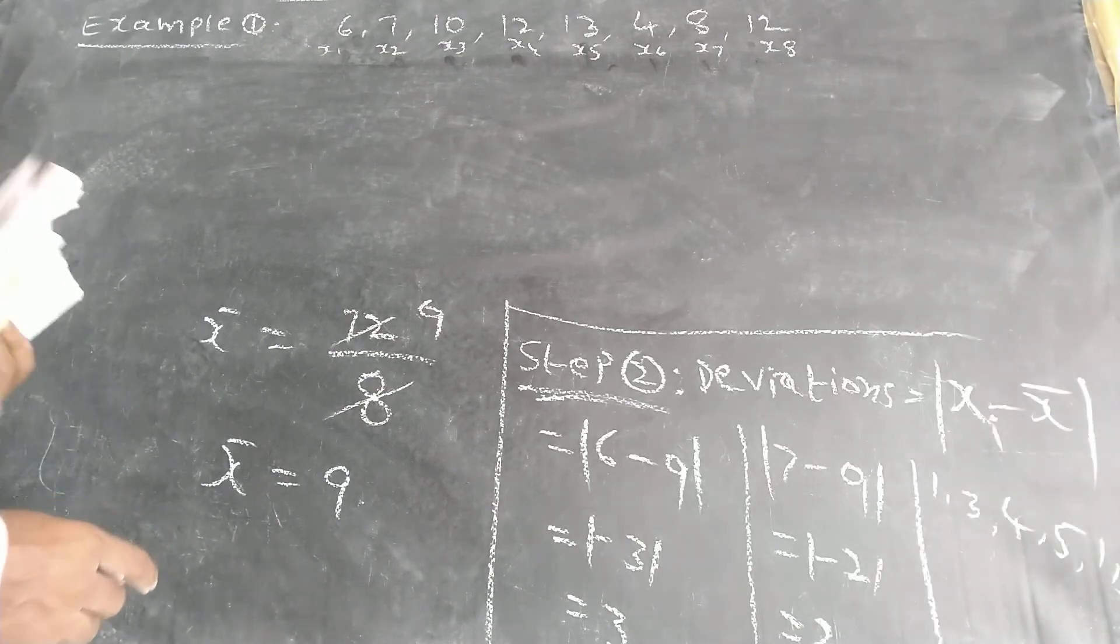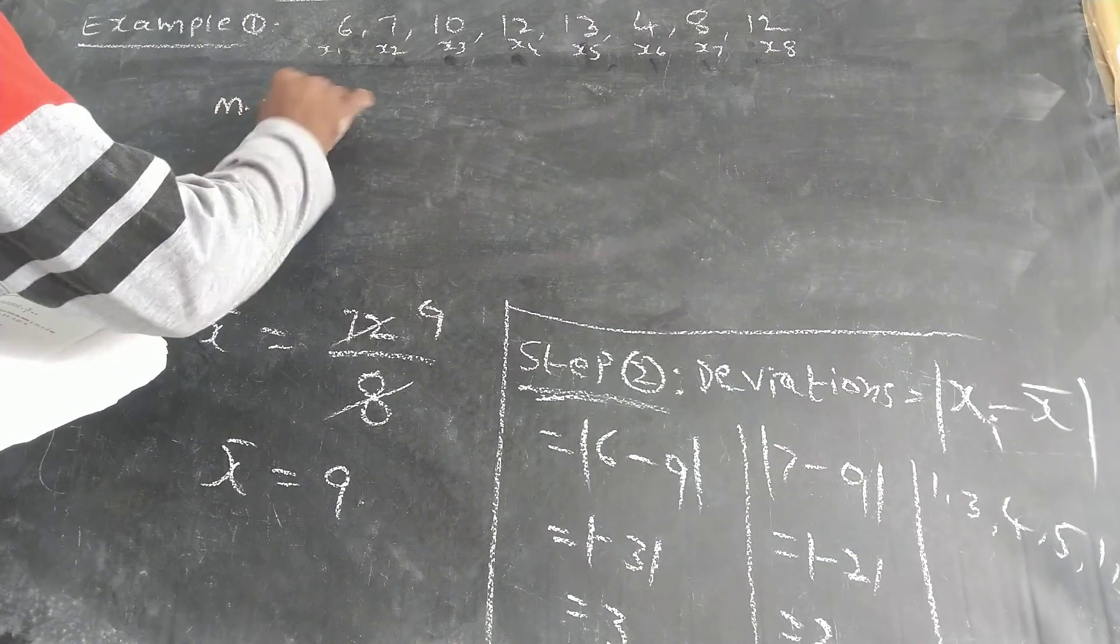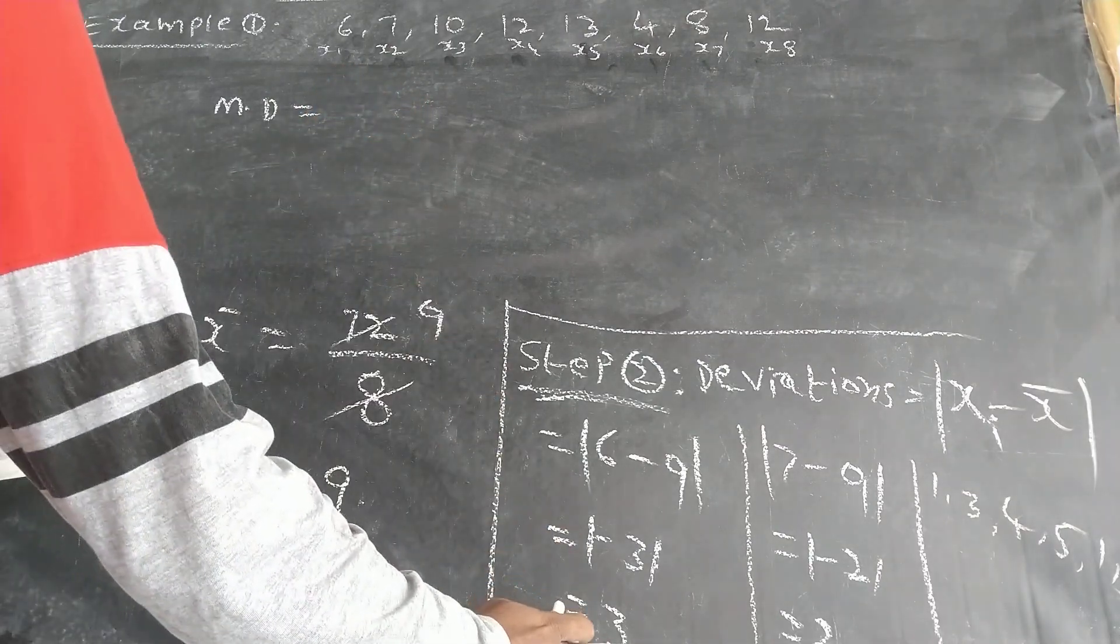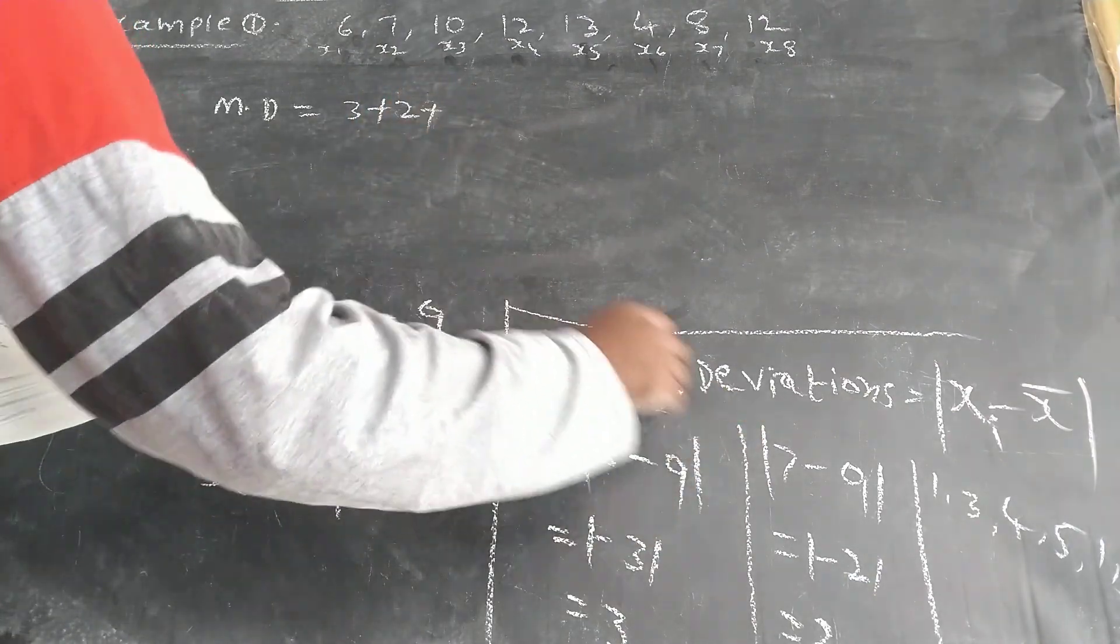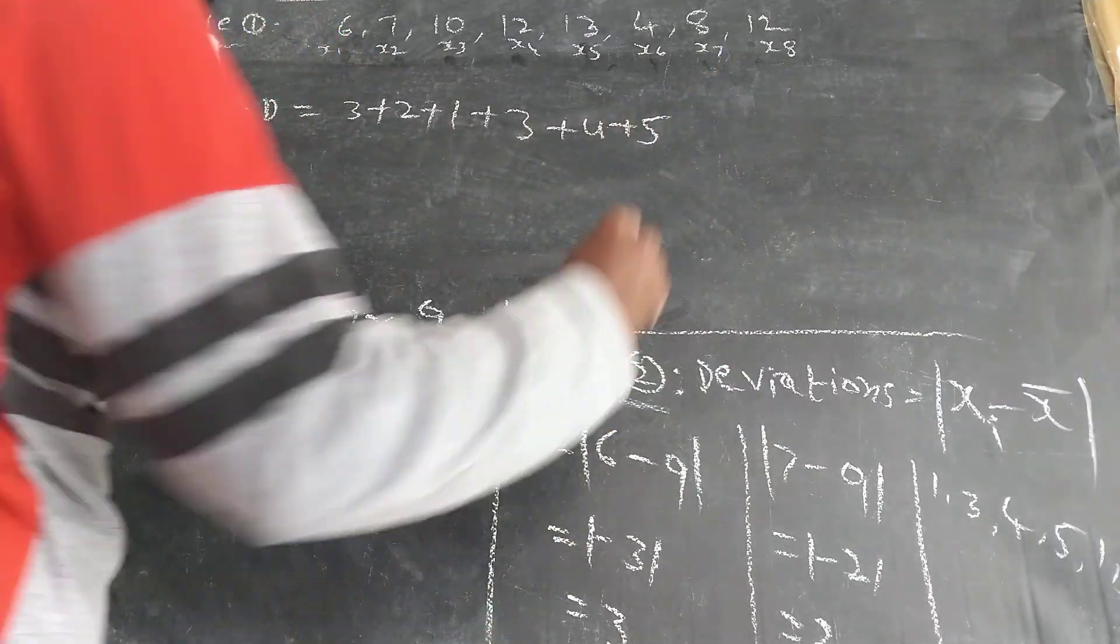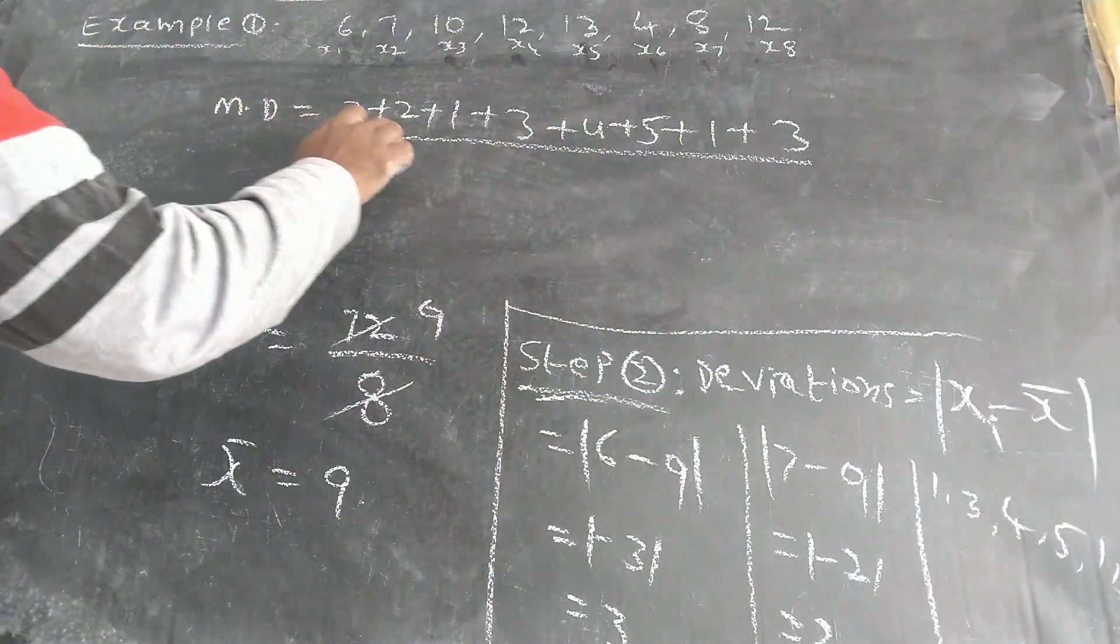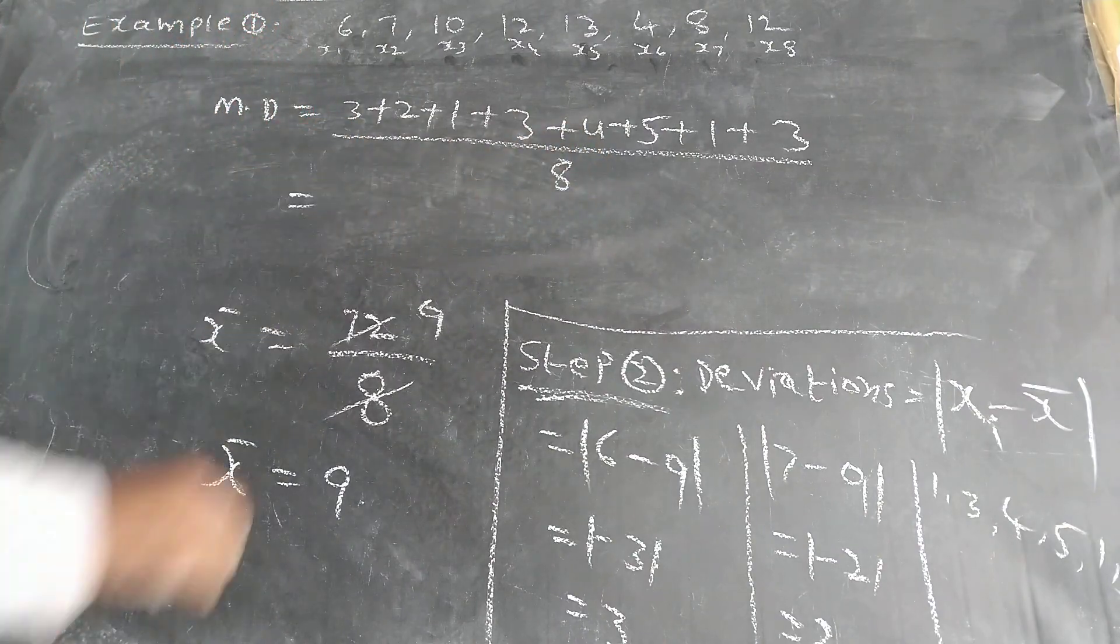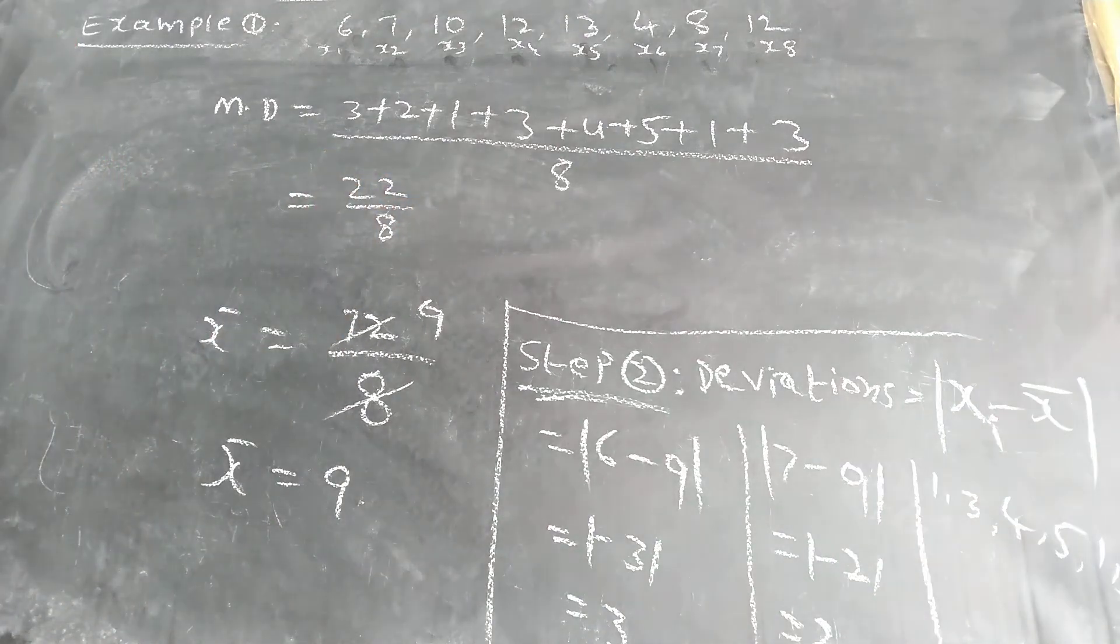Now here, already you're finding mean of deviation equals what you can write. Already you found the values: 3 plus 2 plus 1 plus 3 plus 4 plus 5 plus 1 plus 3, by 1, 2, 3, 4, 5, 6, 7, and 8. So this total you can add. What is the total? 22.